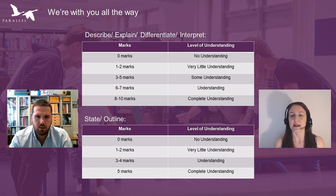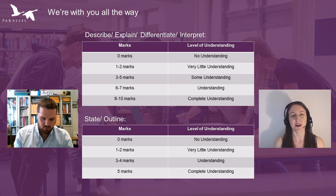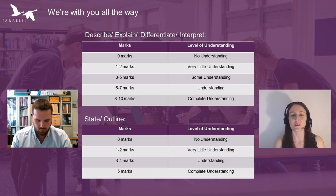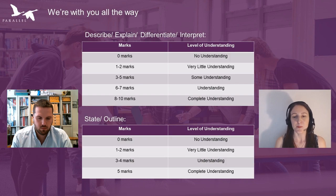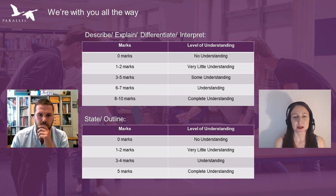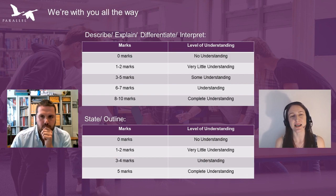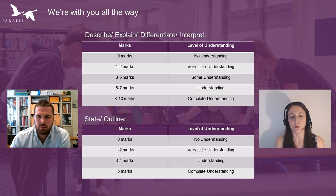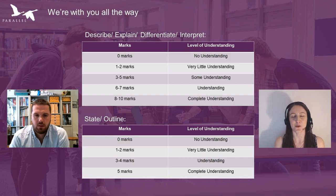To get the top end of marks you need to show a really complete, detailed understanding of the subject area — answer the question and show a lot of knowledge to get those 8 to 10 marks. In comparison, if you've only provided a little bit of information, or something that's not technically correct, the examiner will be looking at the 1 to 2 mark banding. The grid is split into describe/explain/differentiate/interpret on one side, and state/outline slightly differently.